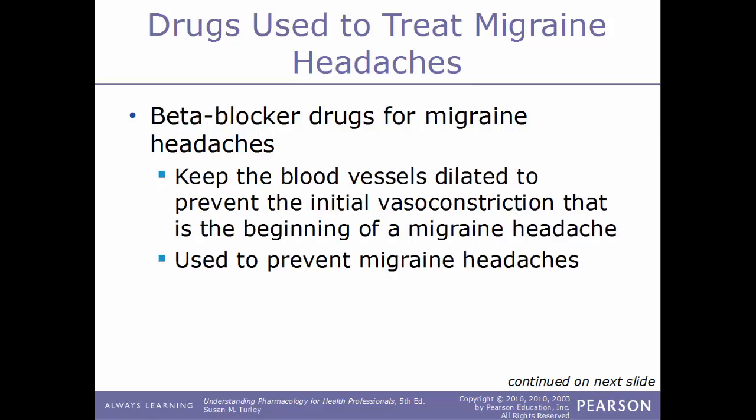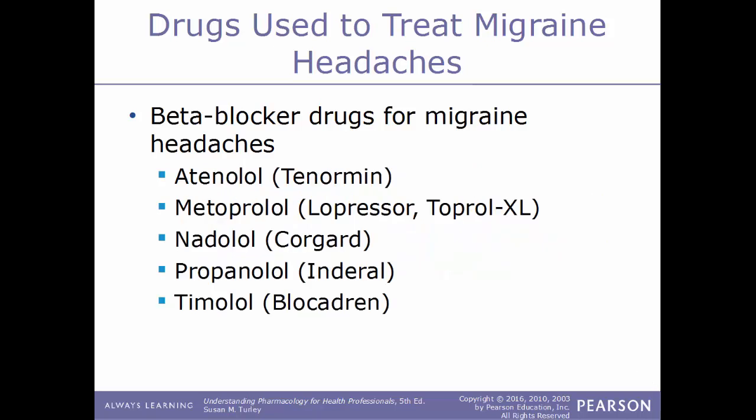Beta blocker drugs are also used to treat migraines. These work to keep the blood vessels dilated to prevent the initial vasoconstriction that begins a migraine headache, so these are used to prevent migraines. Examples include atenolol, also known as Tenormin; metoprolol, known as Lopressor or Toprol XL; nadolol, also known as Corgard; propranolol, known by its trade name Inderal; and timolol, known by its trade name Blocadren.